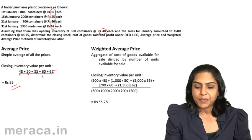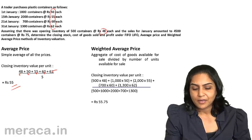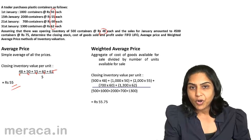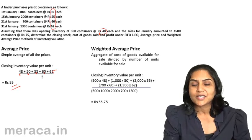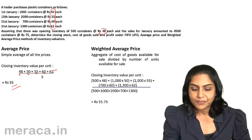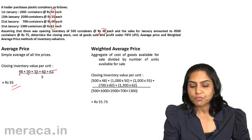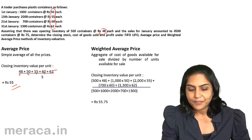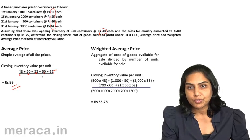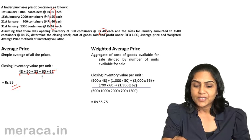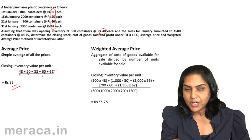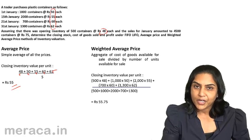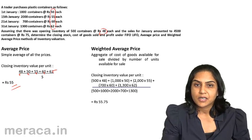This method is simple but it is not very popular nor considered very scientific, since the quantities involved in the purchase at the different prices are not considered. If the batch size of each purchase is more or less the same, this method could be applied, but otherwise it is not usually used. A simple average of all the prices involved during that period gives us the average price with which we value both inventory and cost of goods.